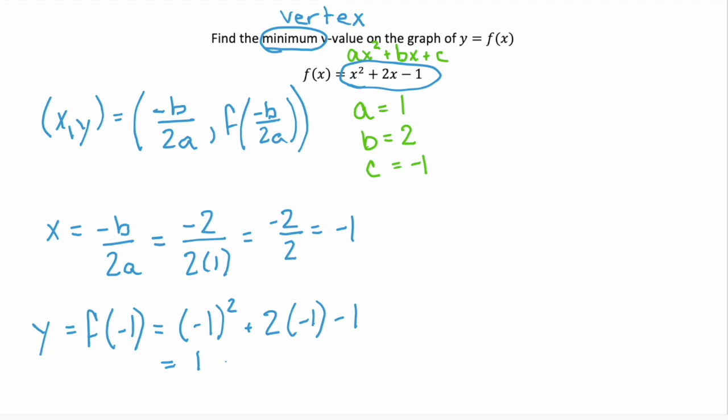Negative 1 squared is 1. 2 times negative 1 is negative 2 and minus 1. And 1 minus 2 minus 1 is negative 2.